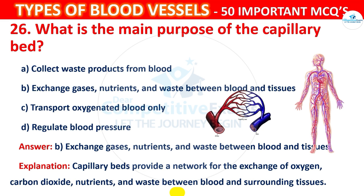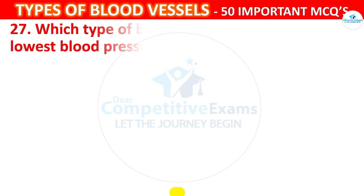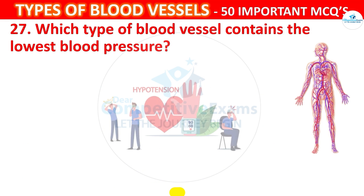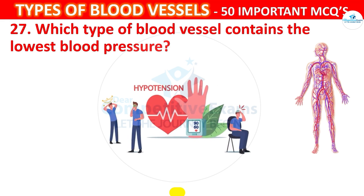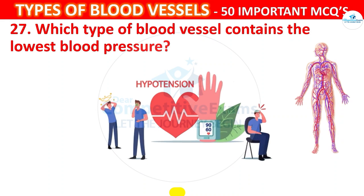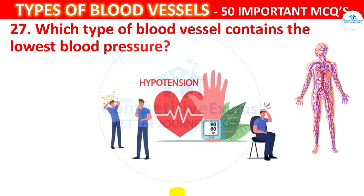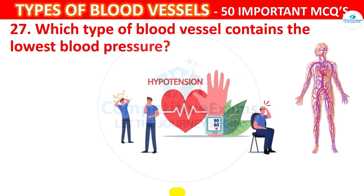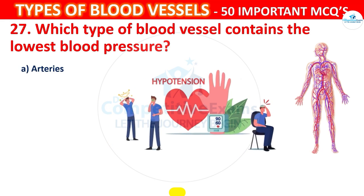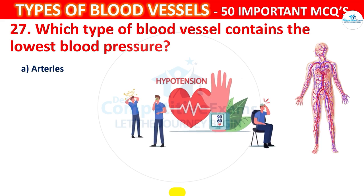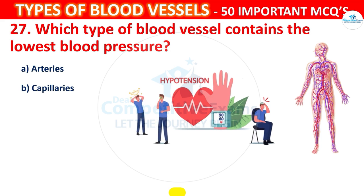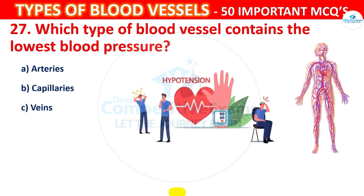Question number 27. Which type of blood vessel contains the lowest blood pressure? Your options are: Arteries, Capillaries, Veins, or Arterioles.